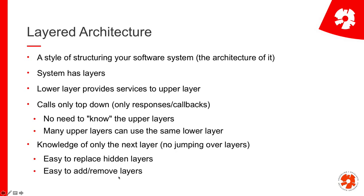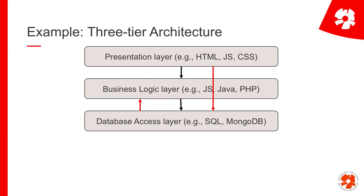A very common example in the web is the so-called three-tier architecture — a layered architecture with three layers. At the very top we have the presentation layer: HTML files, JavaScript, CSS — all the stuff that the user directly sees.